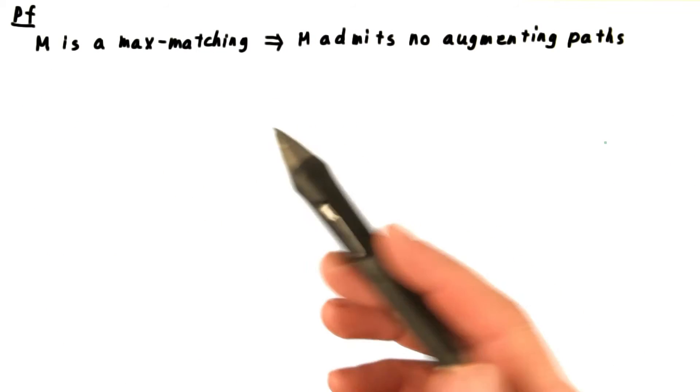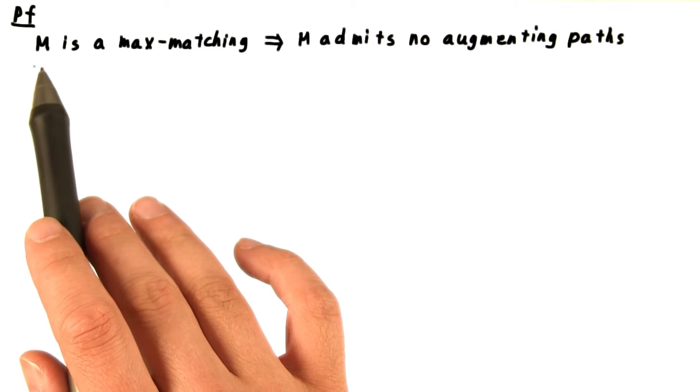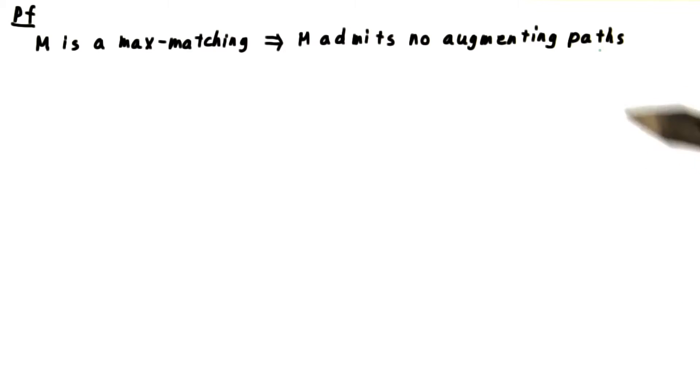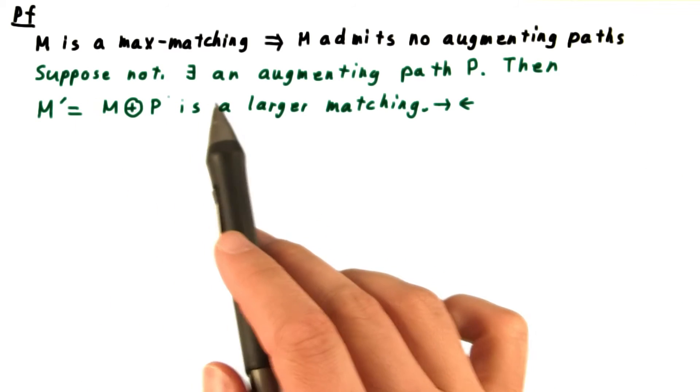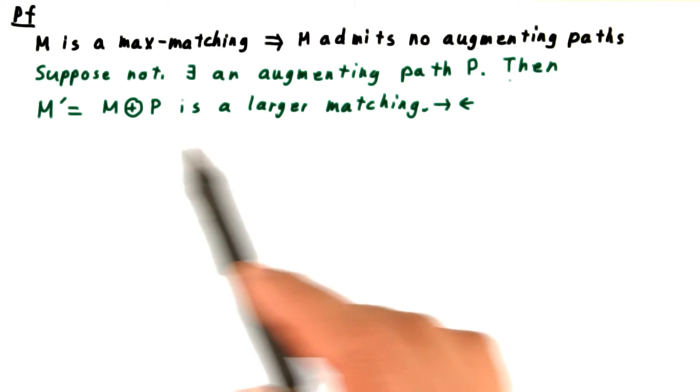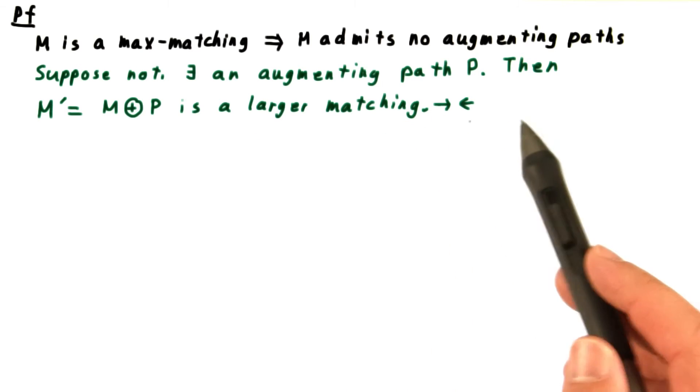The proof will be very similar to the max flow min cut theorem. First, we'll show that if M is a max matching, then it can't admit any augmenting paths. Well, suppose not. Then there is some augmenting path. And if we augment M by this path, we get a larger matching, meaning that M was not a maximum as we had supposed.